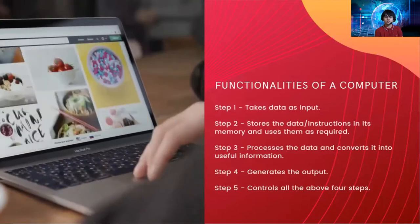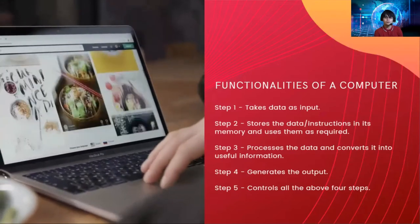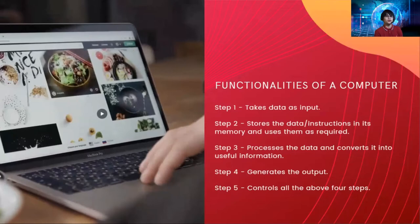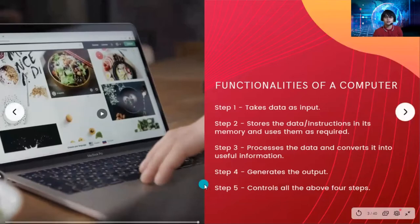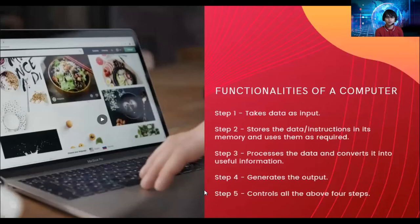We're going to start with the functionalities of the computer. Step 1: it takes data as input — you give the instructions to a computer. After that, it stores the data or instructions in its memory and uses them as required. Then it processes the data and converts it into useful information, and generates an output back to the user. The last functionality is it controls all the different steps from step 1 to step 4.